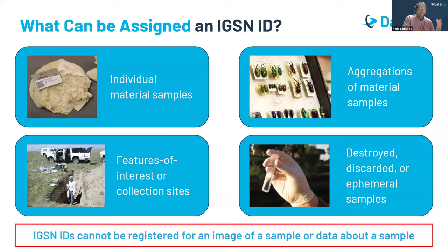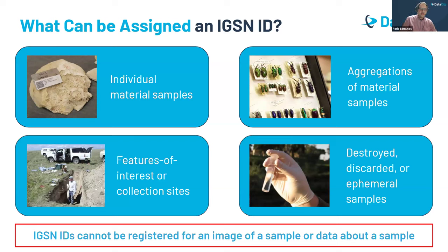What can be assigned an IGSN ID? You can assign them to individual material samples, but beyond that you can also assign them to aggregates of material samples — at the collection level rather than for individual samples. They can be applied to features of interest — collection sites, the places where sampling took place. The samples themselves don't have to be persistent; they can be used for destroyed, discarded, or ephemeral samples. As long as the sample existed at some point, it can be given an IGSN ID. Importantly, an IGSN ID is really for the sample itself — not for an image of a sample or analytical data about the sample.